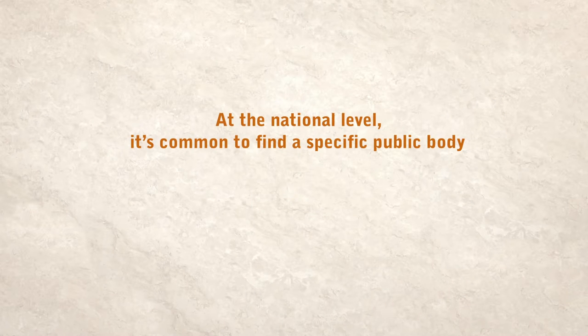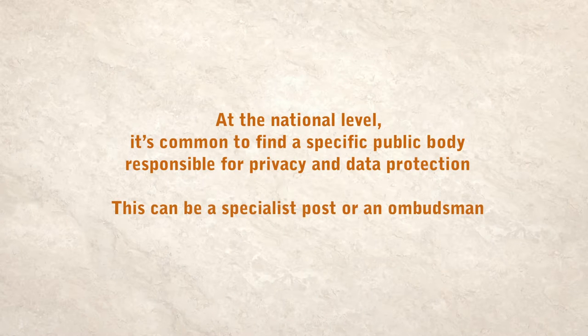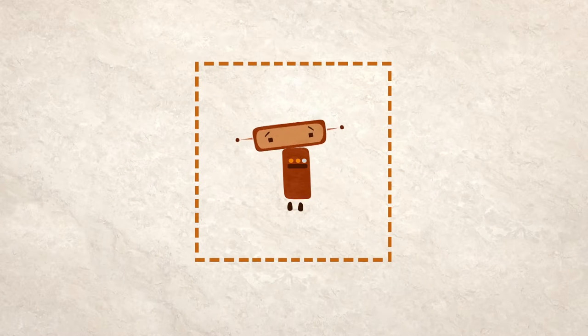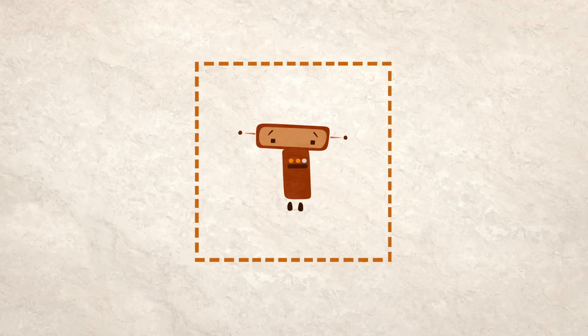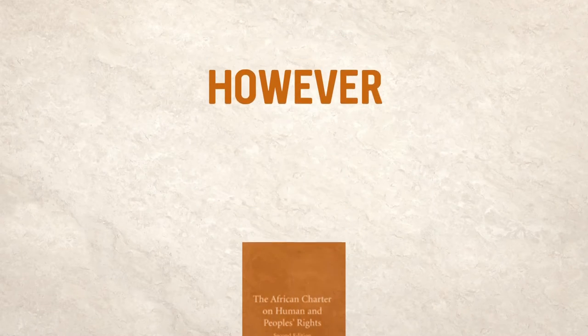At the national level, it's common to find a specific public body responsible for privacy and data protection. This can be a specialist post or an ombudsman. But the extent to which privacy is defined and protected varies greatly between different jurisdictions. For example, there is no clear right to privacy in the African Charter on Human and People's Rights.